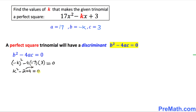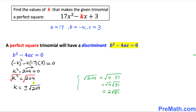Moving negative 204 to the other side gives us positive 204. Let's take the square root on both sides to undo the square, so we get k equals positive or negative square root of 204. Simplifying this radical, the square root of 204 turns out to be 2 times the square root of 51. So k equals positive or negative 2 times the square root of 51.